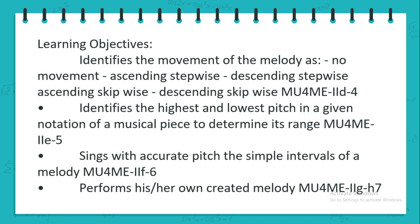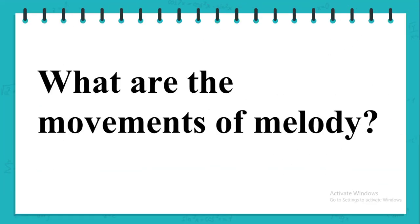Identify the movement of the melody as: no movement, ascending stepwise, descending stepwise, ascending skipwise, or descending skipwise (MU4 MEIID4). Identify the highest and lowest pitch in a given notation of a musical piece to determine its range (MU4 MEIIE5). Sing with accurate pitch the simple intervals of a melody (MU4 MEIIF6). Perform his or her own created melody (MU4 MEIIGH7).